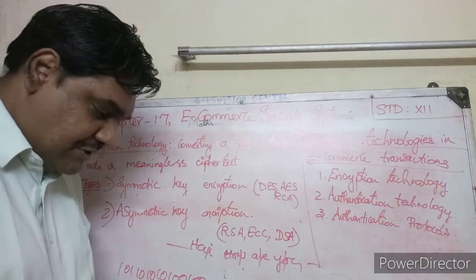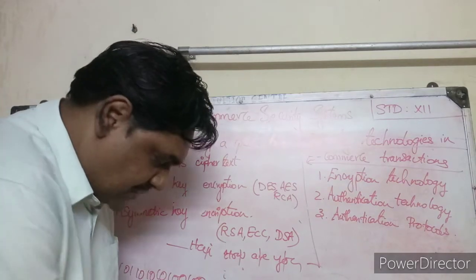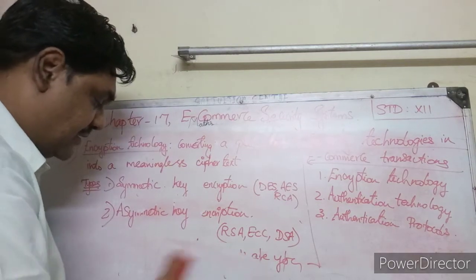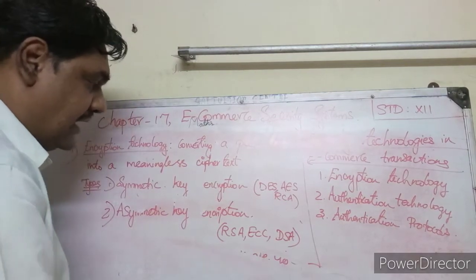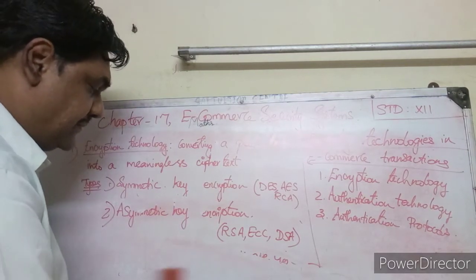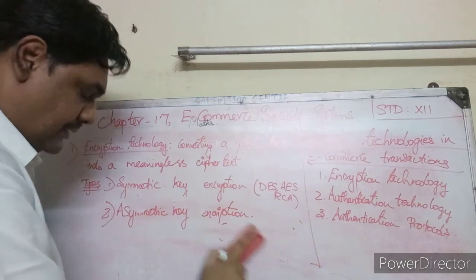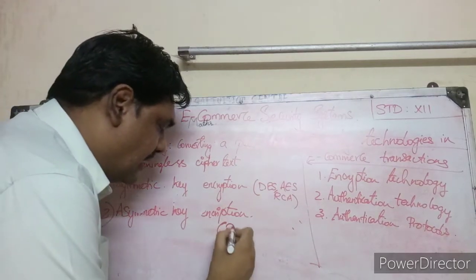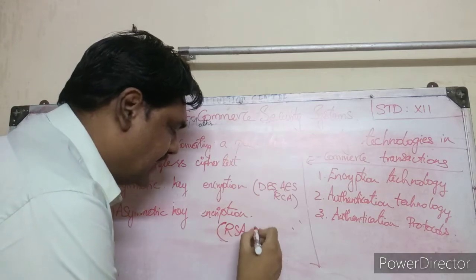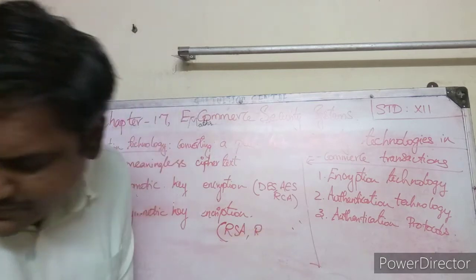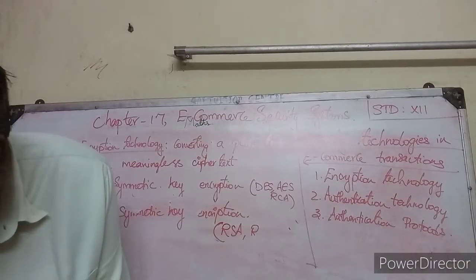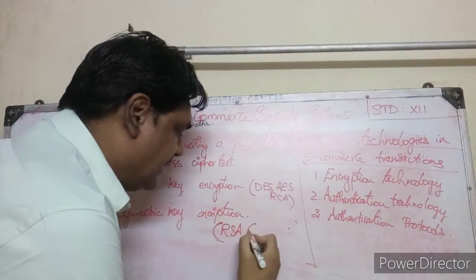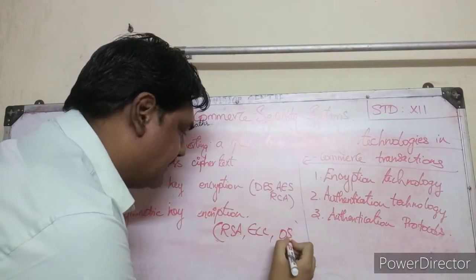A well-known example of asymmetric key encryption is RSA — which stands for Rivest, Shamir, and Adleman — as well as ECC (Elliptic Curve Cryptography).